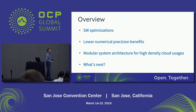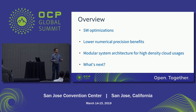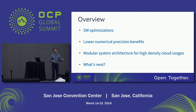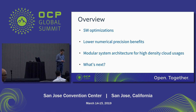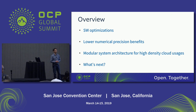First I want to share some of the software optimizations we're doing to get good performance out of our Xeon platforms, motivate some of the instructions we're adding by discussing the benefits of lower numerical precision, then talk about a modular architecture we're contributing as part of an OCP platform, and share some of the other work we are doing.